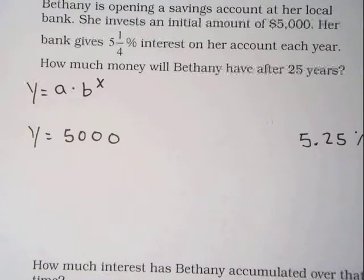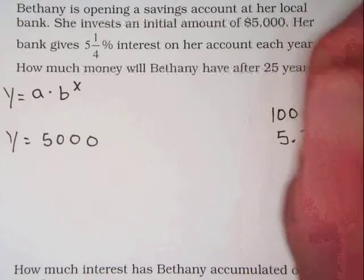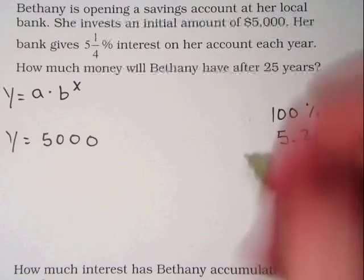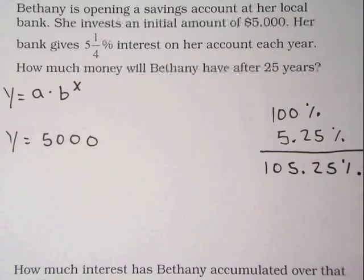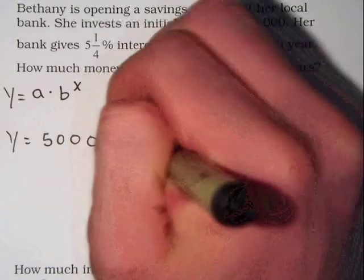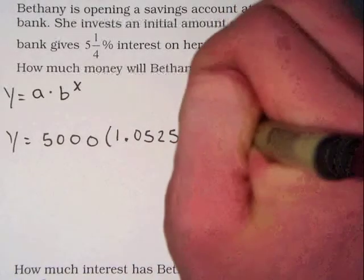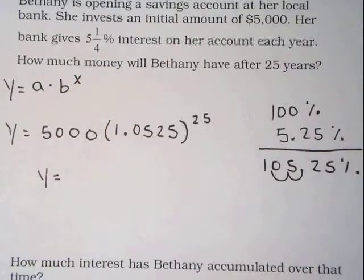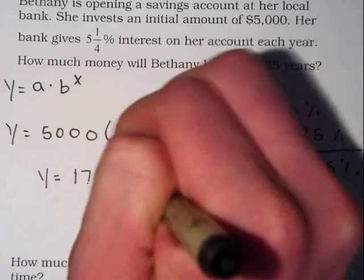We need to add 5.25% to 100% of our entire savings each year. When we do this, we calculate our growth rate to be 105.25%. By moving the decimal place two places to the left, we end up with a decimal equivalent of 1.0525 for our growth rate. X represents our time, and the question asks us to find the value of our account after 25 years. When I plug all of this into the calculator, after 25 years my savings account will be worth $17,968.95.